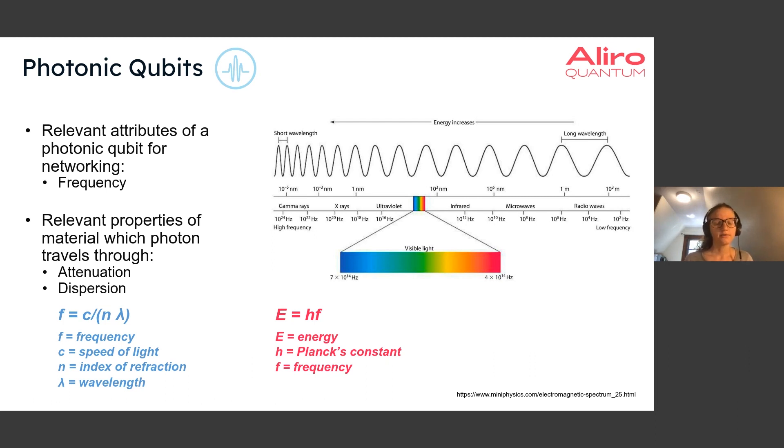Some of the relevant properties of the material that the photon will travel through that we should pay attention to include attenuation, which is the loss of the material that the photon will travel through and what kind of loss this photon will experience. It's usually measured in decibels or in decibels per kilometer, as well as dispersion, which is how the refractive index of the material will change with wavelength. Dispersion will mean that basically light of different wavelengths will have different speeds while traveling through even the same material.